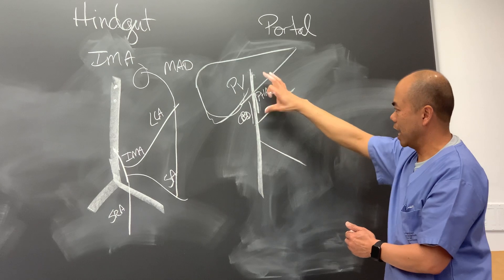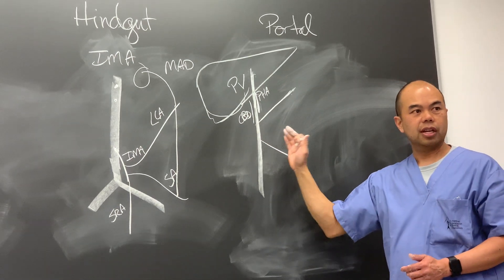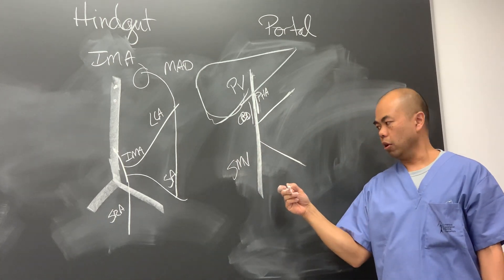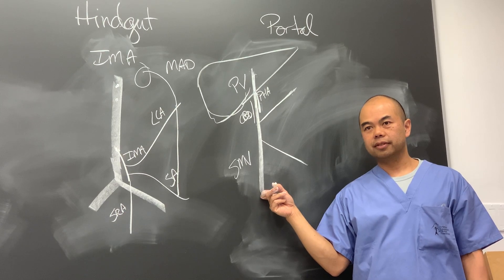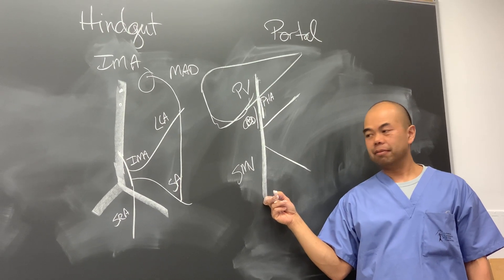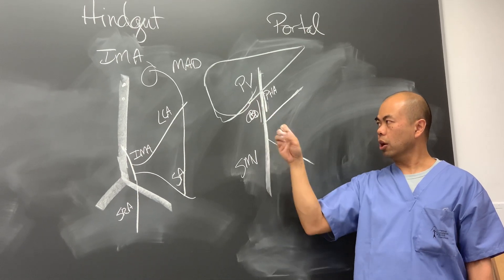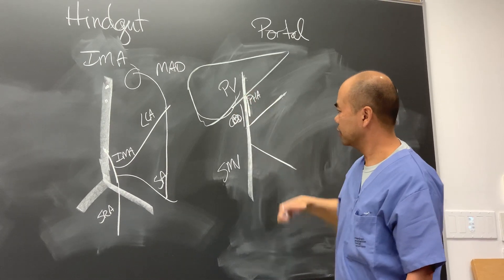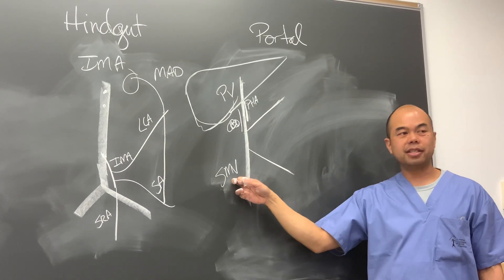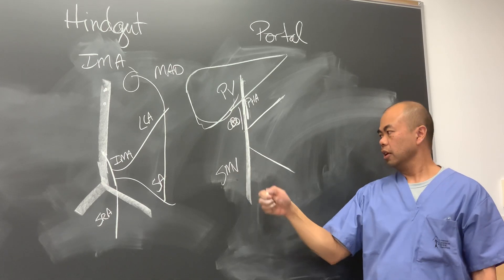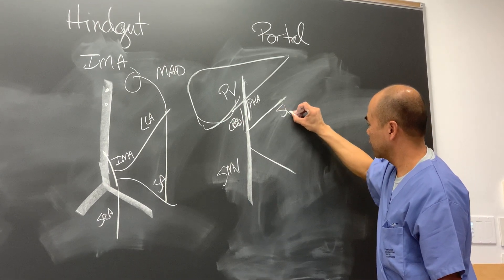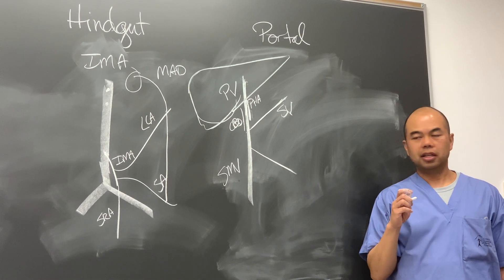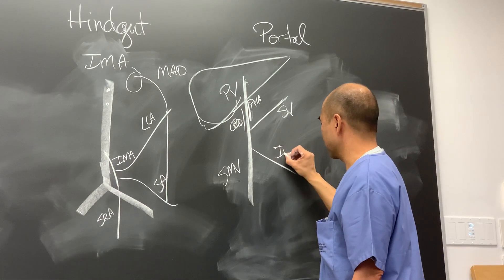The portal vein receives three tributaries: the superior mesenteric vein, which drains the midgut; the splenic vein, which drains the foregut; and the inferior mesenteric vein, which drains the hindgut. It's not actually called the portal vein until all three of those veins come together.